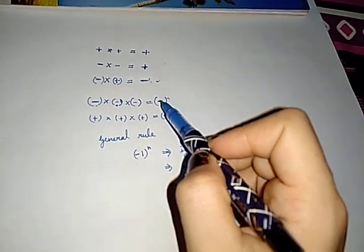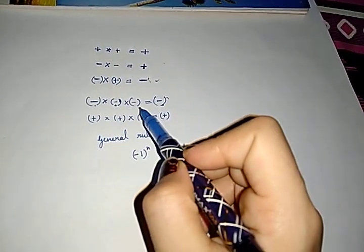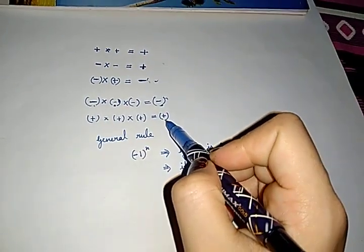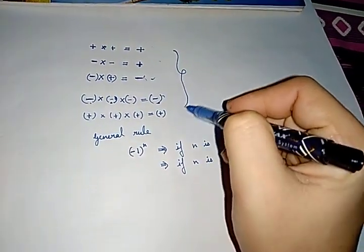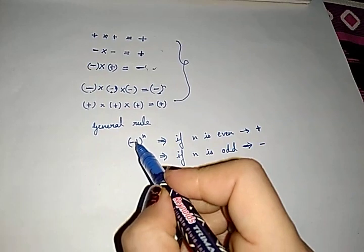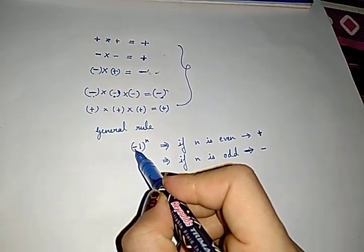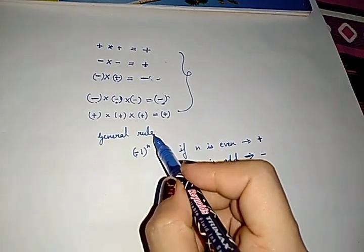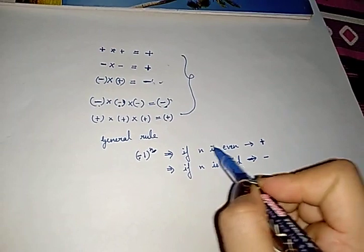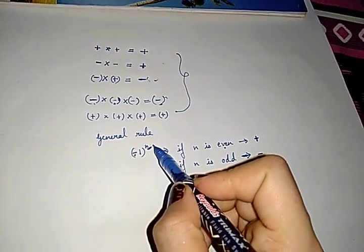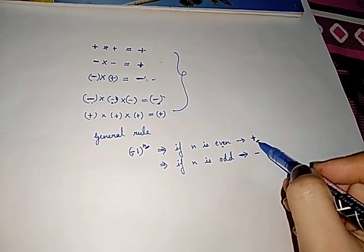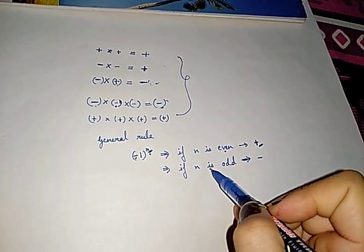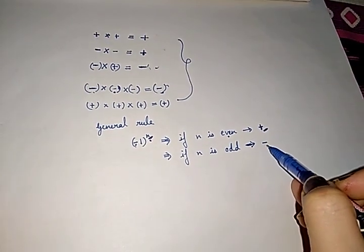If there are 3 negative numbers, then your answer will be negative. But if there are 3 positive numbers, your answer will be positive. Generalizing all these, we come to a conclusion: if negative sign is raised to the power n — if n is even, meaning 2, 4, 6, or 8 — then your answer will always be positive. But if n is odd, your answer will come in negative.